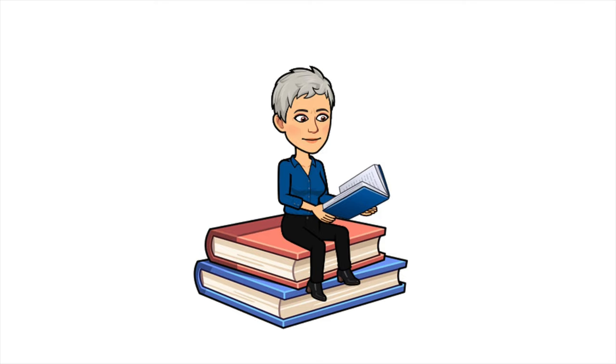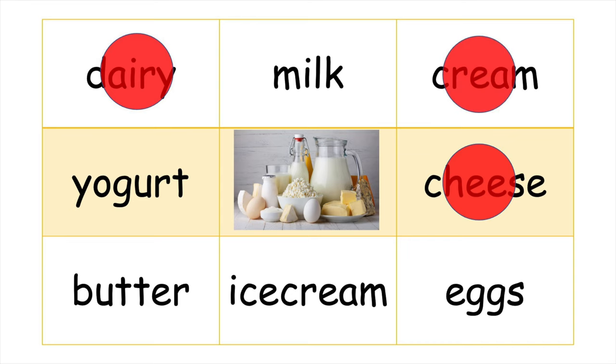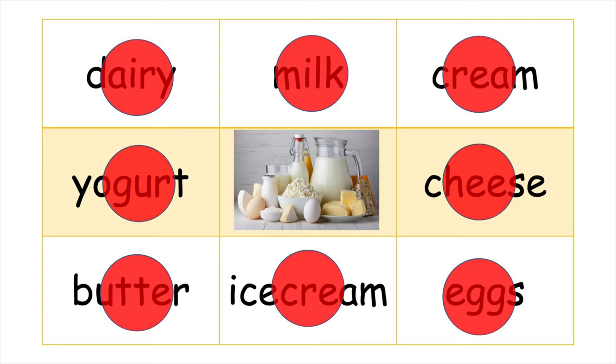Let's practice reading with some bingo. So I've put all the words we've learned today on this bingo card. I'll say the name and you find it. Dairy. Cheese. Cream. Ice cream. Yogurt. Milk. Butter. Eggs. How did you do? Did you get them all?